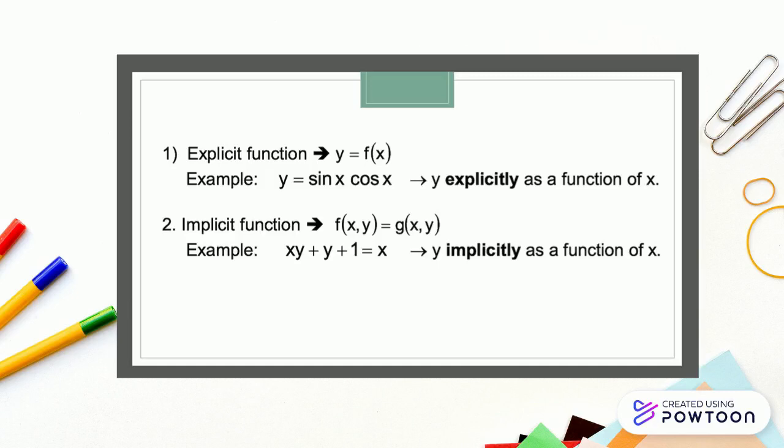We recall the explicit function y = f(x). For example, y = sin x cos x defines y explicitly as a function of x. For implicit functions, we know that in the equation we have two or more variables.